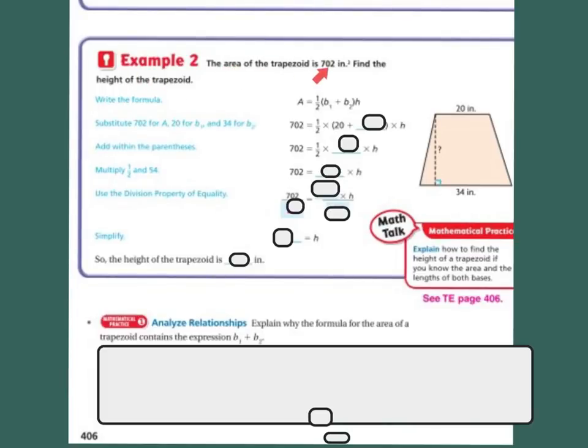All right, example 2. The area of a trapezoid is 702 inches. We're going to find the height. So now we know the whole area, so we've got the area answer, right? And we know the two bases, but we don't know the height. So we're going to just plug in what we know. So for A for area, we're going to plug this in. We still have our half. We know our bases is 20, and then we know our other base is 34. And then we're going to multiply it times the height, which we don't know.